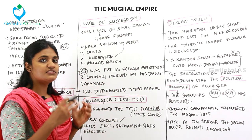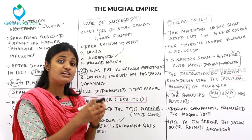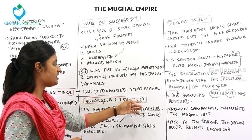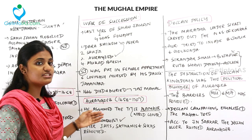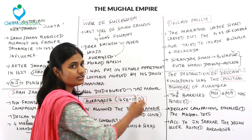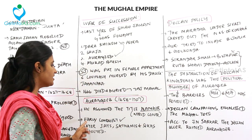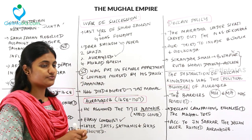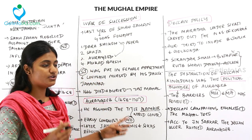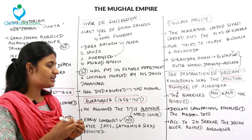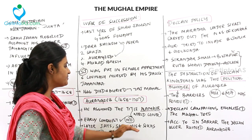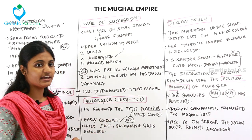Aurangzeb, the last strong Mughal ruler, ruled from 1658 to 1707. He assumed the title Alamgir, meaning 'world conqueror.' His early conquests over about 20 years were all successful, but problems began when he turned to the Deccan. The Jats, Satnamis, and Sikhs also started revolting against him.